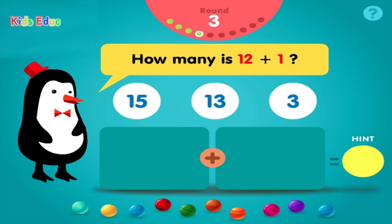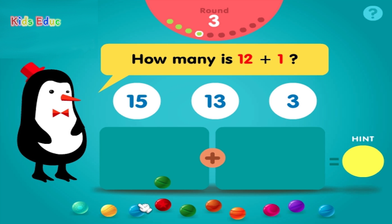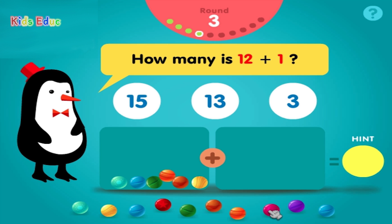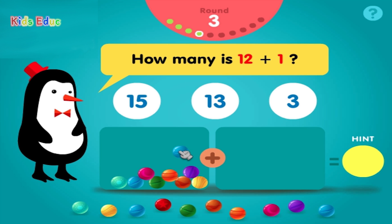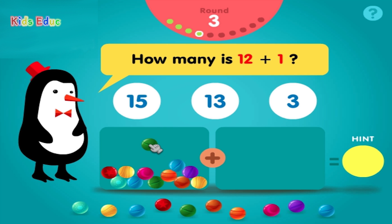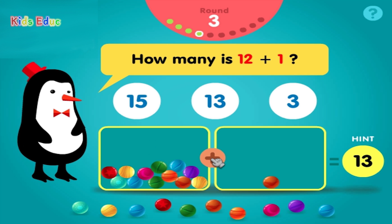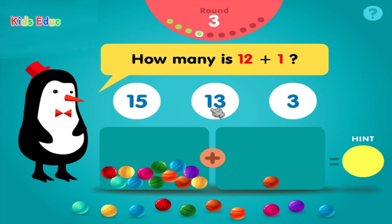How many is 12 plus 1? 1, 2, 3, 4, 5, 6, 7, 8, 9, 10, 11, 12, plus 1, equals 13. Groovy!